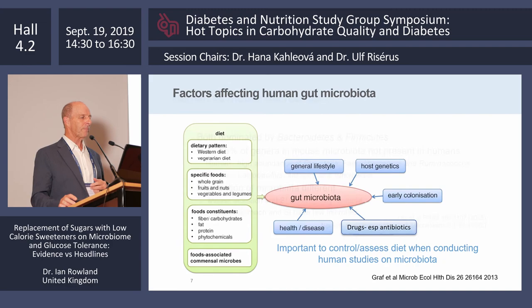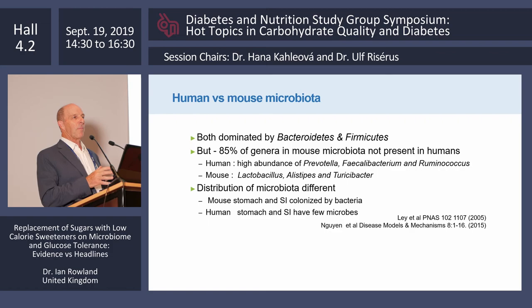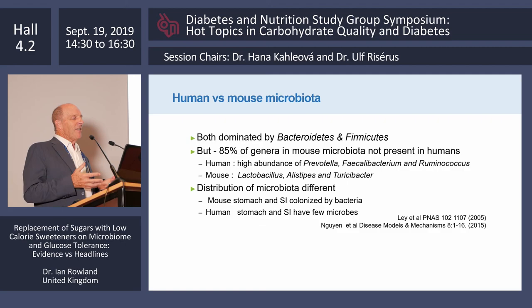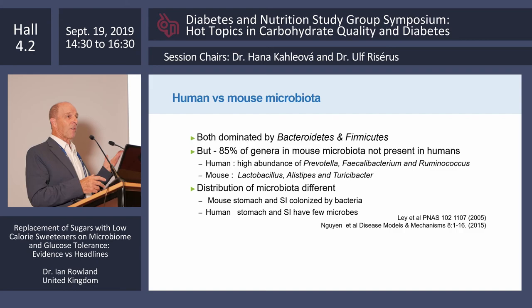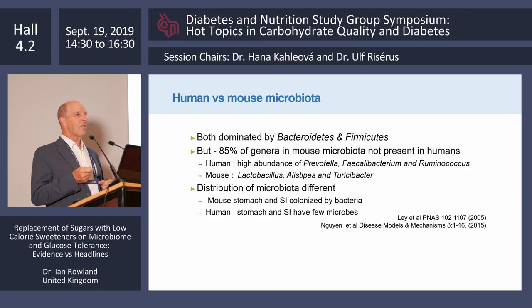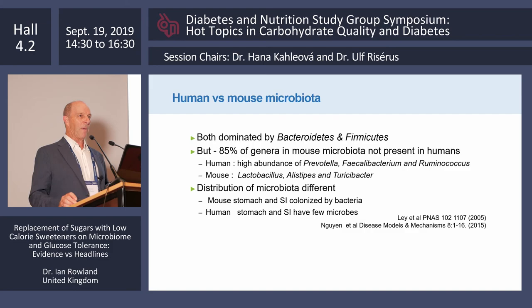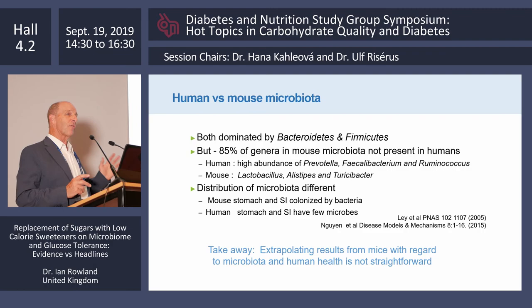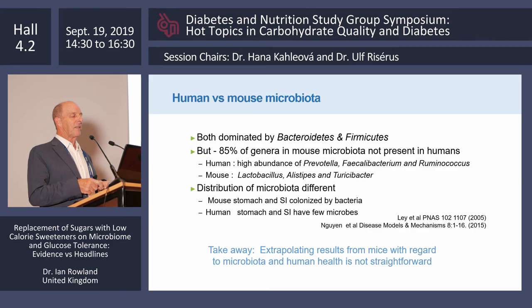It's also worth noting the differences between human and mouse or rat microbiota. Both have dominant groups of Bacteroidetes and Firmicutes, but 85% of the genera in mouse microbiota are not present in humans. For example, mice have a lot of lactobacilli whereas humans have very few. The distribution is also very different — in mice, the stomach and small intestine are colonized by reasonable numbers of bacteria, whereas in humans there are essentially no bacteria in the stomach and very few in the small intestine. This means animal models allow more metabolism of compounds in the upper gut. Extrapolating microbiota results from mice to human health is therefore not straightforward and must be done with caution.